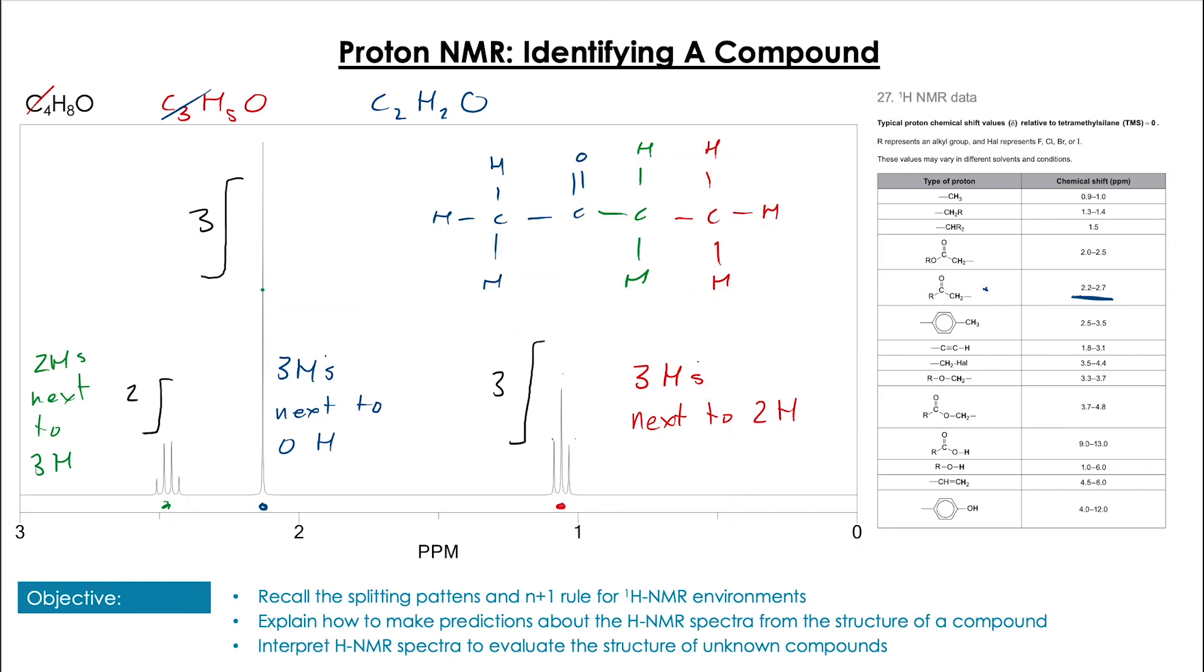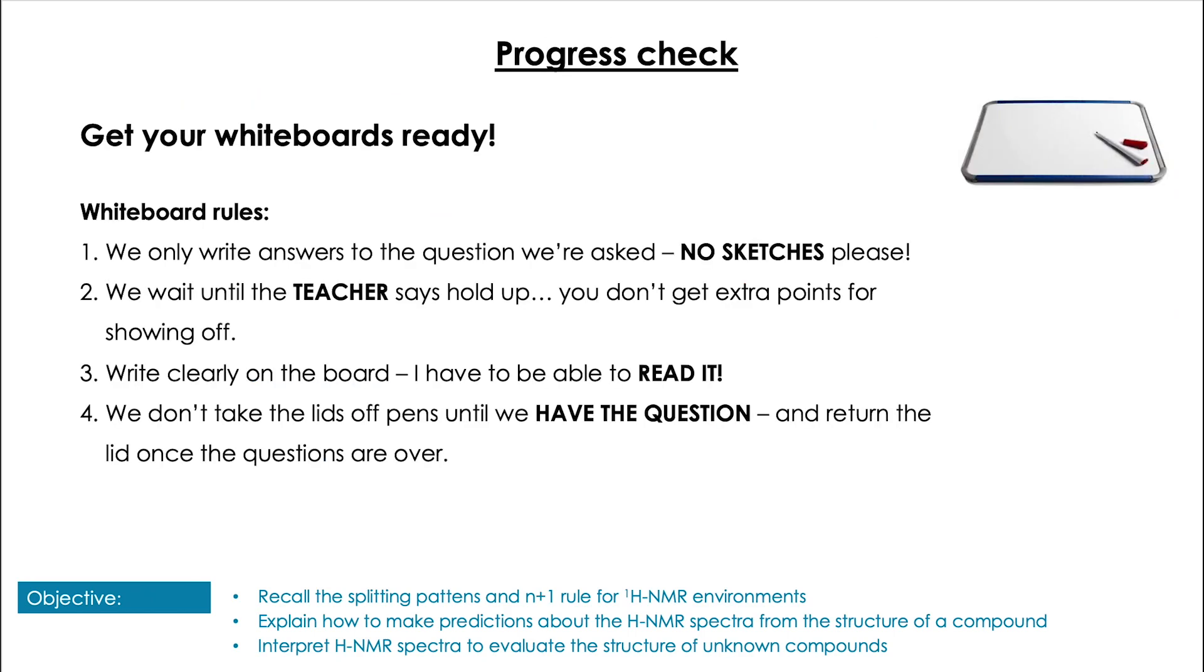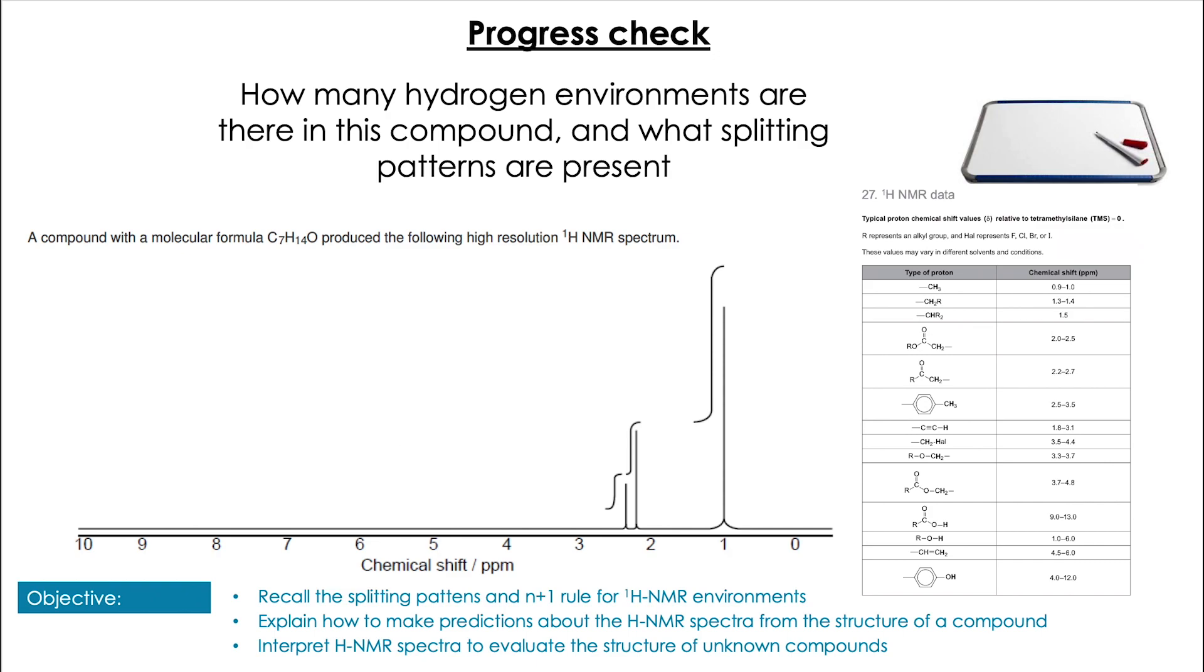So let's have a go at some simple questions first and build our way up. First question: how many hydrogen environments are there in this compound? Pause the video and just take your time. Pop them up. In this spectra we can see three specific resonances, and each resonance must represent a separate hydrogen environment. So we have three hydrogen environments in this compound. The question didn't ask, but we can also see that there is no splitting in this spectrum.